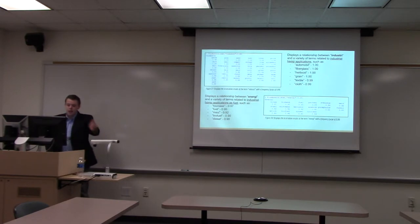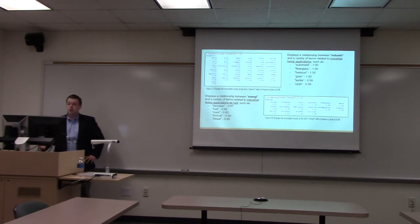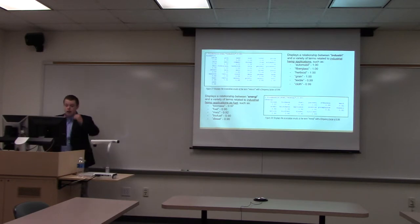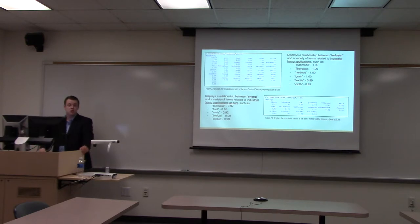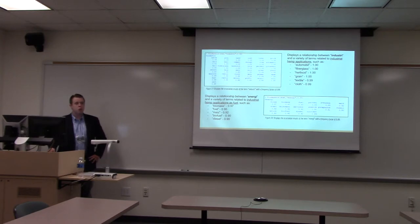Next we have 'industry' in the academic corpus — applications in the automobile industry, fiberglass, herbicides, grains, textiles, and clothing. Again, looking at foods or other applications as a staple food source. For 'energy,' this is probably the most industry-focused of the academic corpus — applications as fuel. We get biomass, fuel, maize, biofuel, and diesel. This shows they're discussing how to properly replace corn and ethanol production with a more pest-resistant and higher-yielding crop than corn.